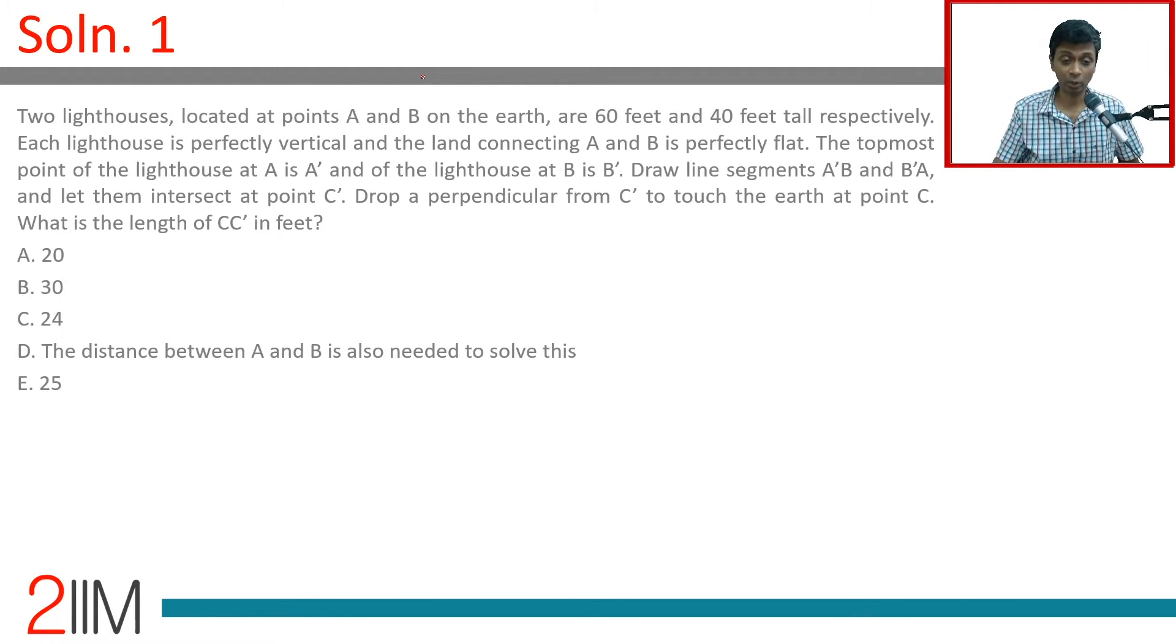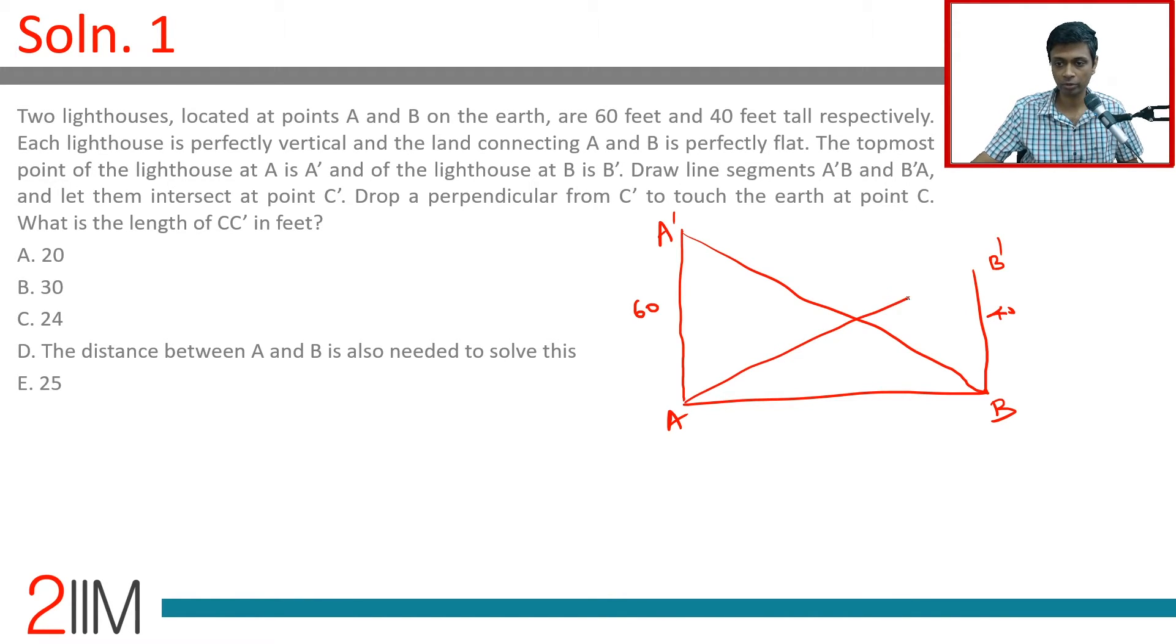I know this diagram. I think we can draw this properly. This is a very common template, so I'm going to draw this very rigorously. So let's say this is A'A, then this is B'B. This is 60 feet, this is 40 feet. We are going to join this and join this, let them intersect at C', and then we have AC somewhere in between.